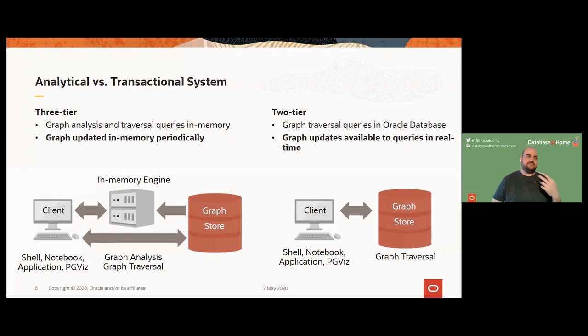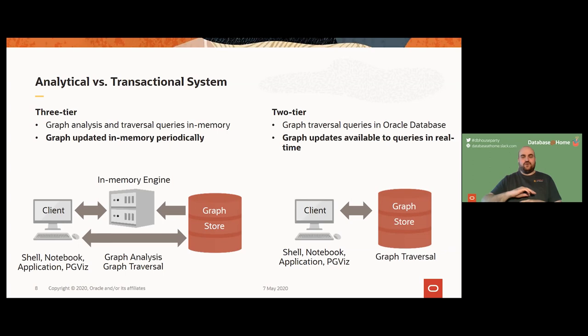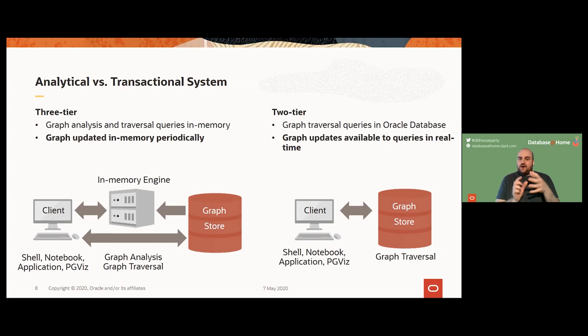The in-memory engine Oracle provides comes with about 60 algorithms with all variants. They cover link prediction, matrix factorization, ranking and walking, structure evaluation, community detection, and machine learning. The documentation is nicely done and explains all of these. The most well-known example everyone knows is PageRank — Google when it started used PageRank to rank search results by how pages are connected to each other: a web page with lots of incoming links is considered important and ranked higher.